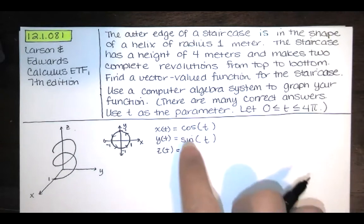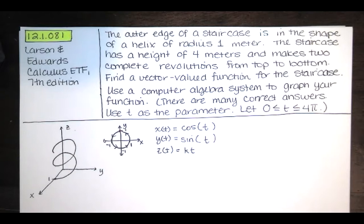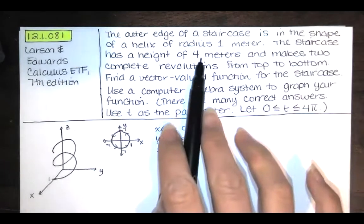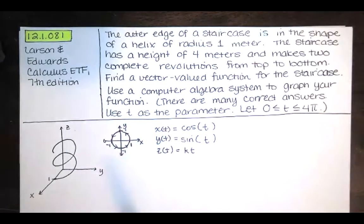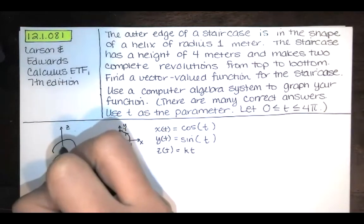We've got x equals cosine, y equals sine, and z equals a constant times t. Now we just have to find the constant. And we're told that the height of the staircase is 4 meters. That's going to be enough to enable us to find that constant.